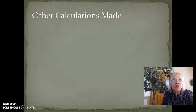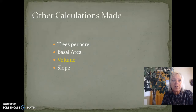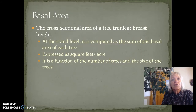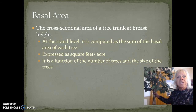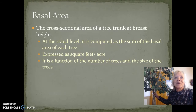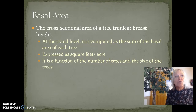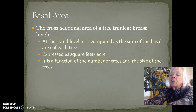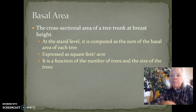Other calculations we are going to learn include basal area, trees per acre, volume, and slope. The cross section or the area of a tree at breast height is called the basal area. It's computed as the basal area of each tree and is expressed in square feet per acre. The two tools we use for that are a prism and an angle gauge.